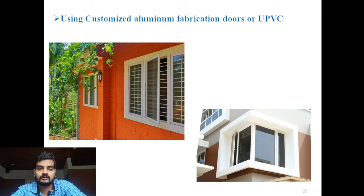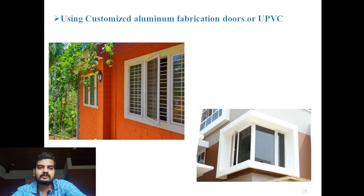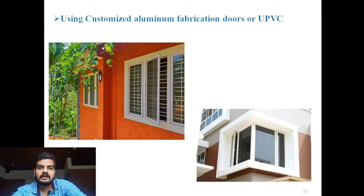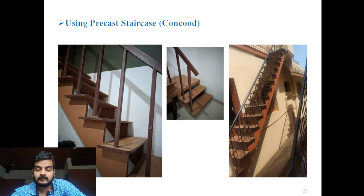Next is using customized fabrication — aluminum fabricated doors or UPVC doors for windows. For aluminum fabricated frames, you can select the color — here I selected white with powder paint. One benefit is that once company-painted, no repainting is needed, unlike wooden or other materials which need repainting after a few years. UPVC — unplasticized PVC — is different from regular PVC pipe, which is deformable. UPVC is strong and is also a good, cheap, quality option for windows nowadays.